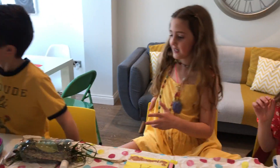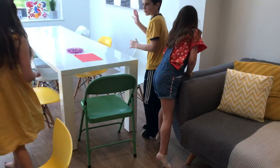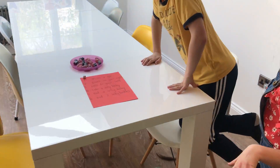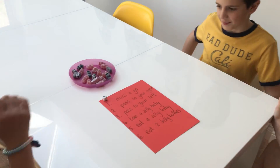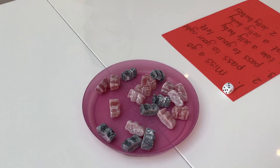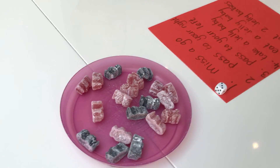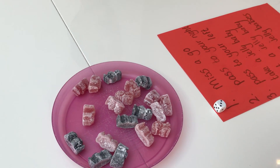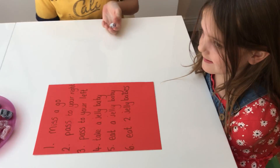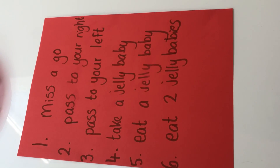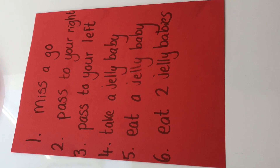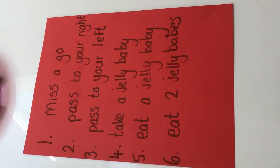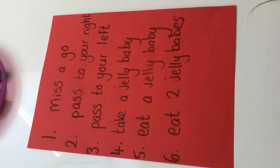For our last activity we're all going to go over to the table. We're going to play the jelly baby game. For the jelly baby game you can use jelly babies or skittles and a dice. If you throw number one you miss a go. Number two you pass to your right. Number three you pass to your left. Number four take a jelly baby. Number five eat a jelly baby. Number six you get to eat two jelly babies.